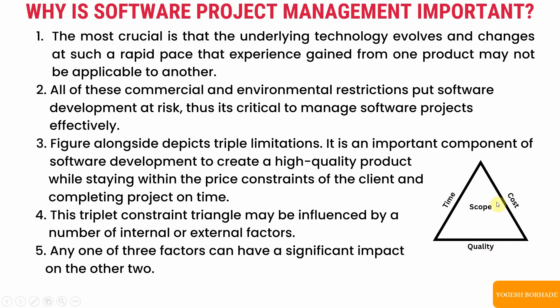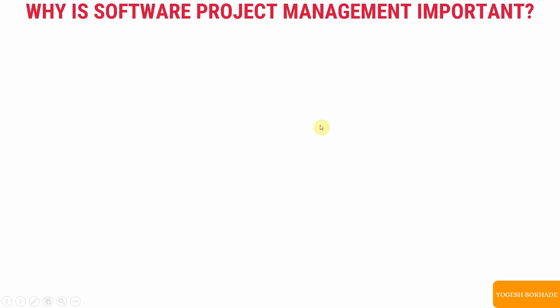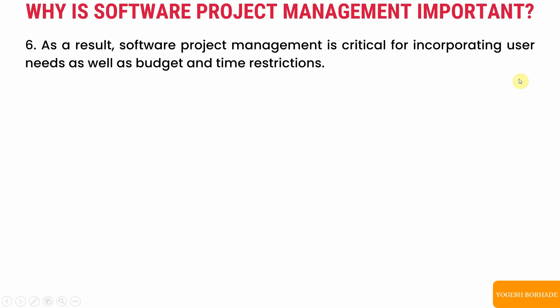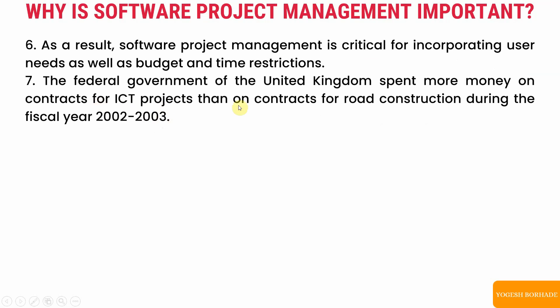As a result, software project management is critical for incorporating user needs as well as budget and time restrictions. It is difficult to maintain product quality within budget while also meeting user needs. For example, the federal government of the United Kingdom spent more money on contracts for ICT projects than on road construction during the fiscal year 2002 to 2003.